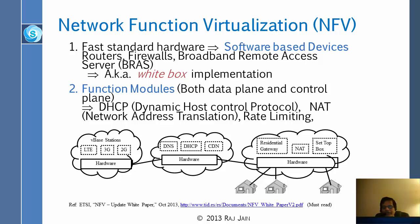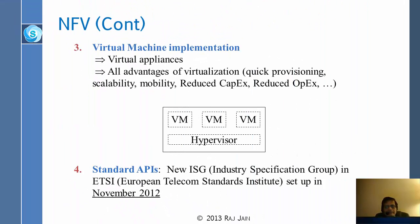Similarly, on residential gateways, many things can run on the white box. The third idea was that everything should be a virtual appliance, so you don't need one box for each function. You can run multiple things in one box and get all the advantages of virtualization: rapid provisioning, scaling, mobility, reduced costs, and everything else. You can spin up thousands of instances in an instant.